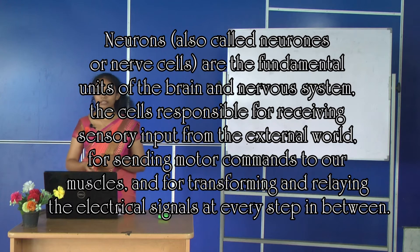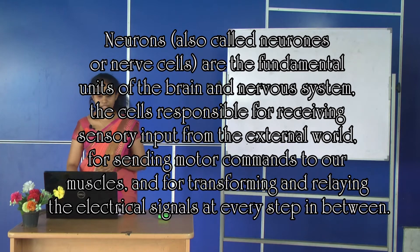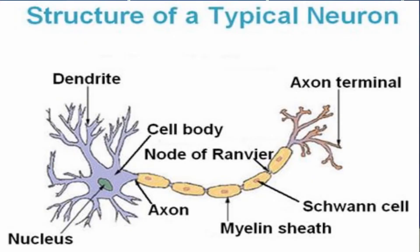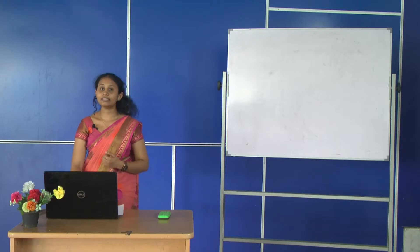When we take a look at a typical neuron, it consists of three main cellular compartments: one is the cell body, then the dendrites, and finally the axons. The cell body is the main genetic and metabolic center of the neuron, and it consists of the nucleus and other cell organelles.